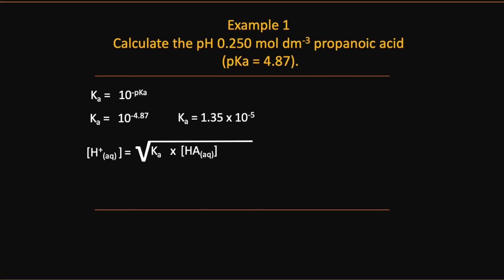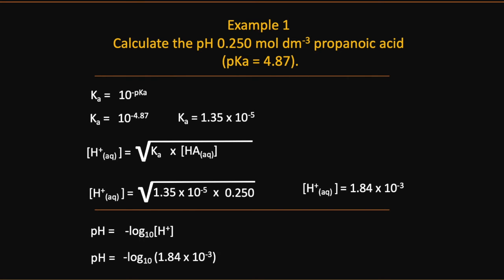We can then substitute that into our Ka expression to find the concentration of H+. And once we have the concentration of H+, we can then pop that into our pH equation to give us the pH of 2.74.